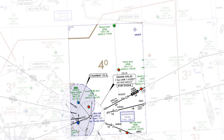In this quadrant, bounded by lines of latitude and longitude, the OROCA is 4,000 feet. If you're planning an IFR flight through this quadrant off a published route, you should plan an altitude of at least 4,000 feet. If all this looks familiar from private pilot training, it's because it's similar to the concept of the Maximum Elevation Figure, or MEF.